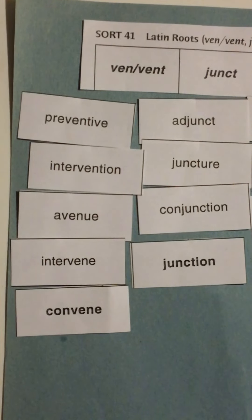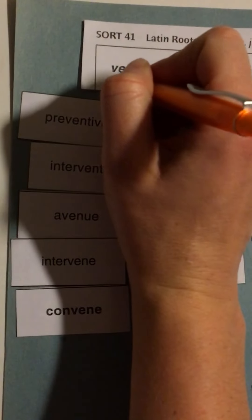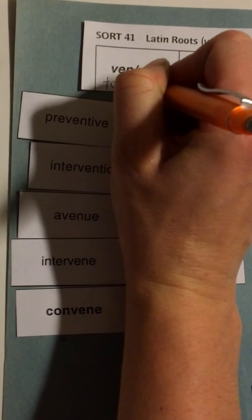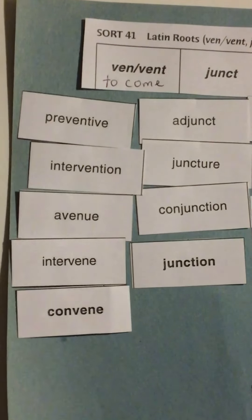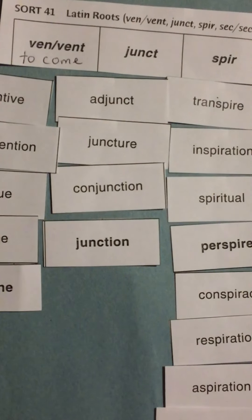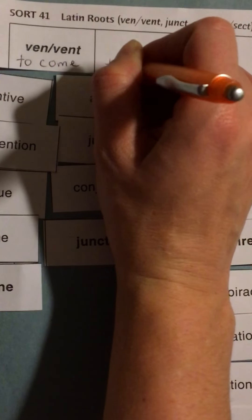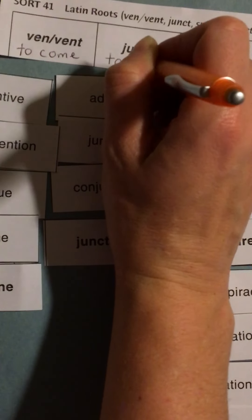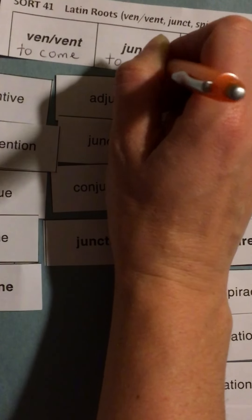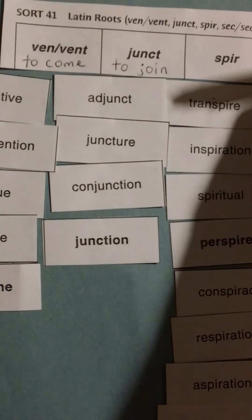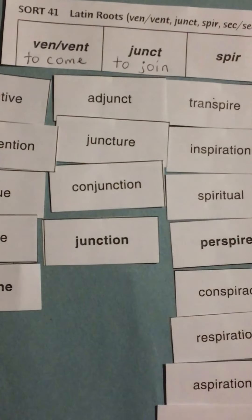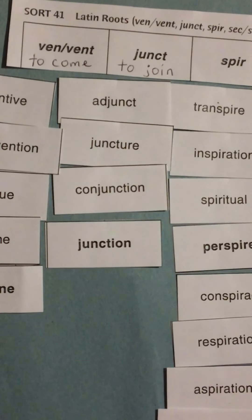The root 'ven' or 'vent' means to come. Adjunct means to join. A lot of times at colleges you will have adjunct professors. They're not there as much as the regular professors, but they are joining, aren't they? Junction could be two streets coming together at a junction — they join up there.